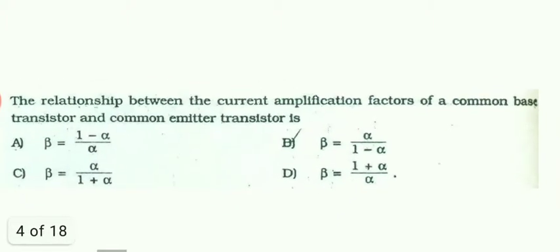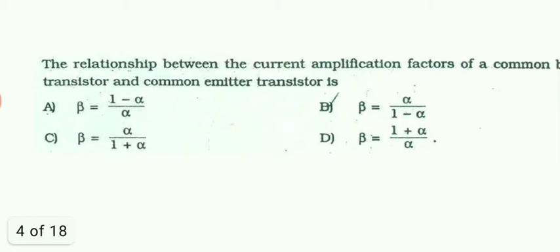The third question is the relationship between the current amplification factors of common base transistor and common emitter transistor. This is also a direct question. Beta is the common emitter amplification factor and alpha is the common base amplification factor. So beta is equal to alpha by 1 minus alpha is the direct answer.